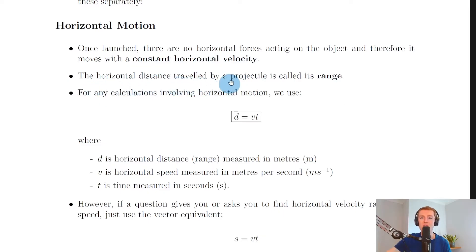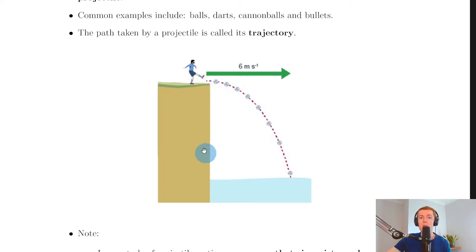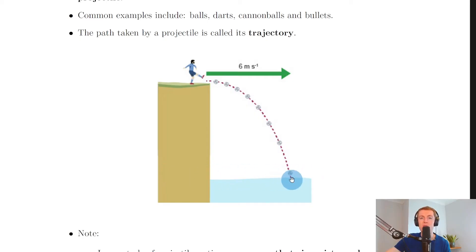The horizontal distance travelled by a projectile is called its range. Looking at the situation of a ball being kicked off a cliff, the ball is kicked with a horizontal velocity of 6 metres per second, which we now know is going to be a constant horizontal velocity. The horizontal distance travelled from the point the ball is kicked to where the ball lands in the water is called its range.